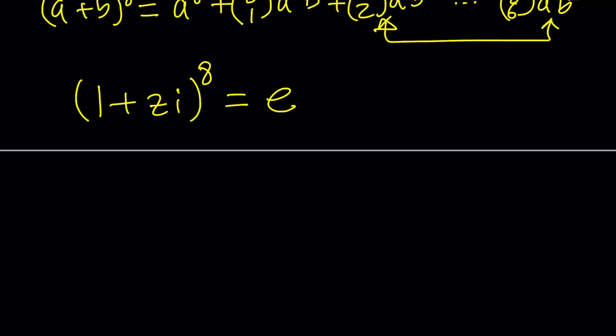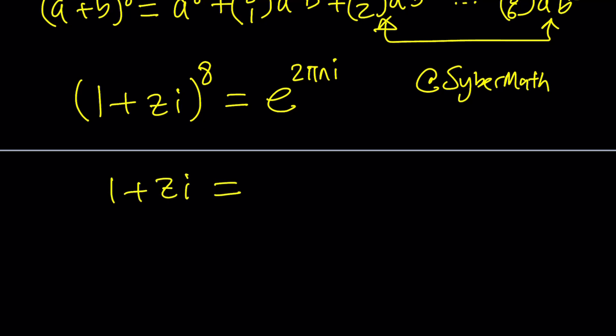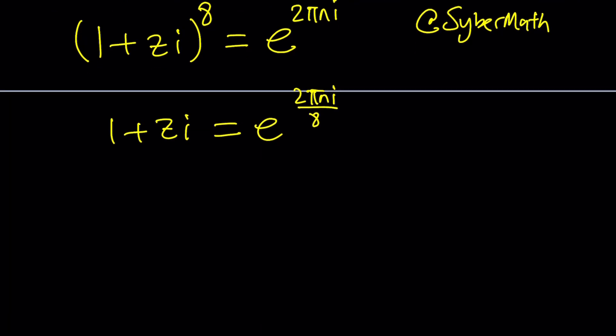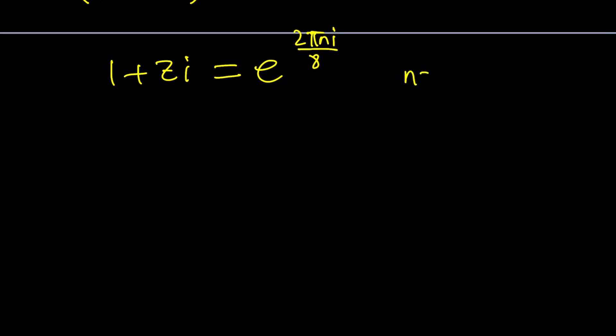To make a long story short, we can write 1 as e^(2πni), thanks to Euler. To find Z, we need to get rid of the eighth power. There are eight numbers whose eighth power equals one, and those numbers are found using the roots of unity. We consider the eighth roots of 1, where n ranges from 0 to 7.